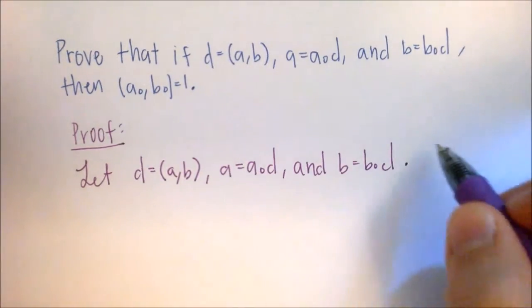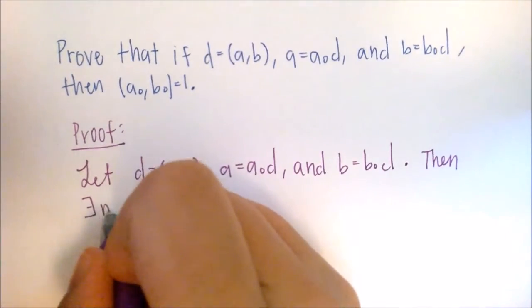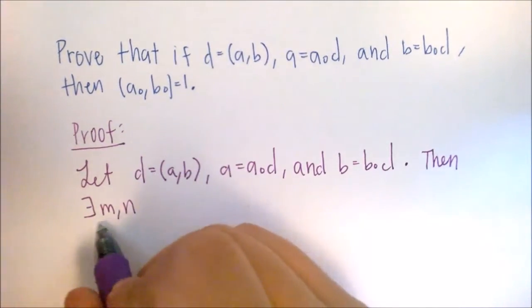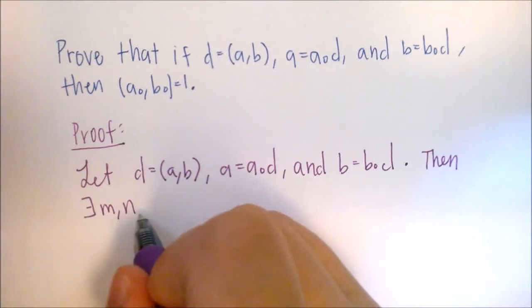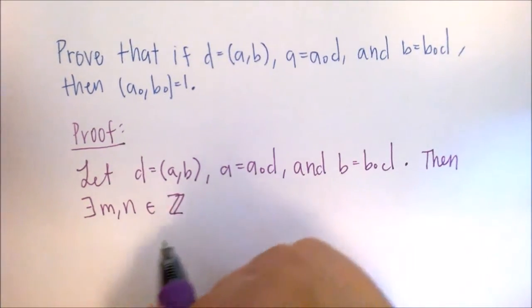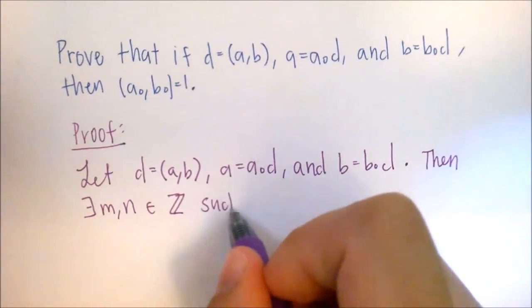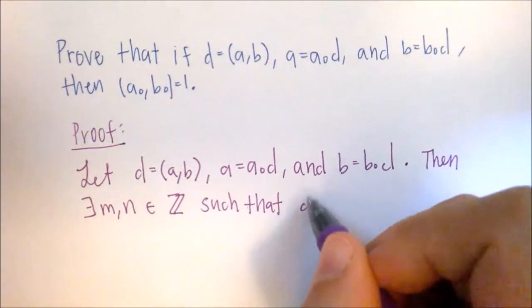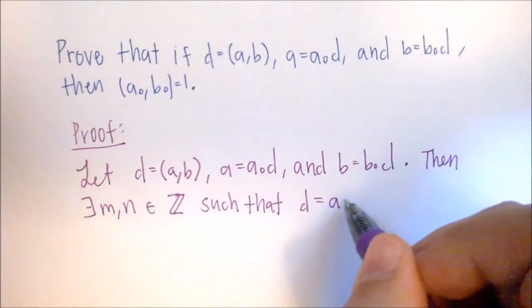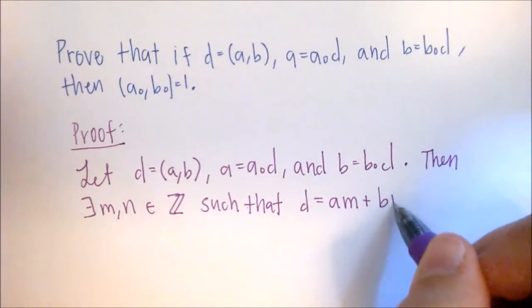And what I mean by that is there exists M and N. M and N are just arbitrary variables that I chose in Z. So M and N are integers, such that D is equal to A times M plus B times N.